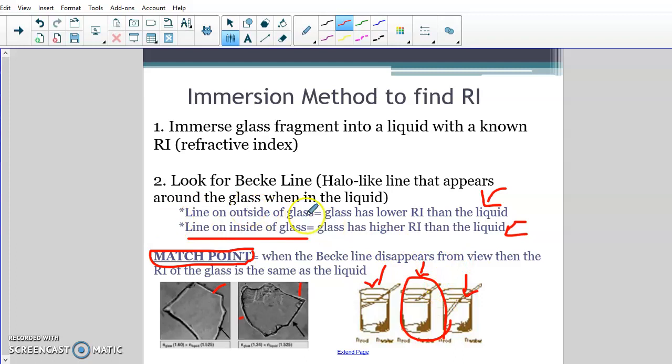So that's how you do the immersion method to find refractive index. Line on the outside of the glass - it's a lower RI than the liquid, so you're going to want to find a liquid that's lower. Becky line on the inside of the glass, you want to look for a higher refractive index liquid. If you hit match point and you can't see the Becky glow at all and it looks like the glass disappears into the liquid, you've hit match point and you know it's refracting the same amount of light. And this is a unique test to do for glass.